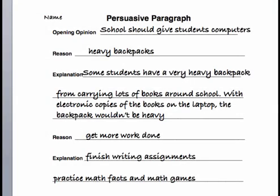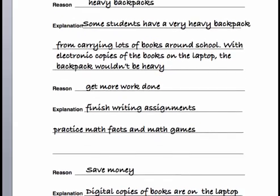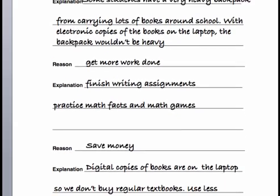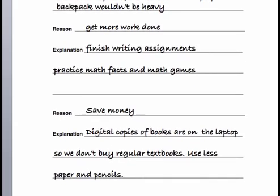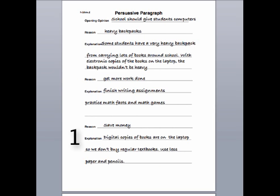Which of your three reason-explanation pairs is the strongest? In other words, if you could only give one reason-explanation pair, which one would you use? Put a one next to it. Which is your next strongest? Put a two next to it. Your last pair gets a three.